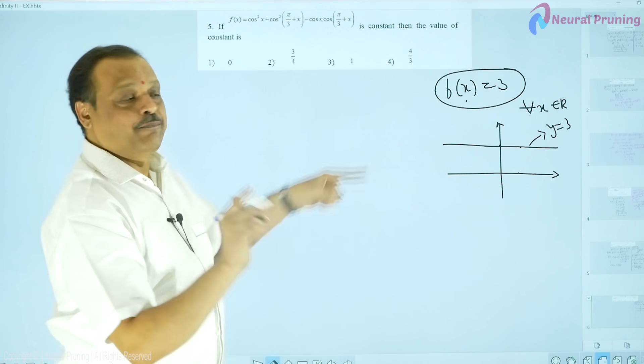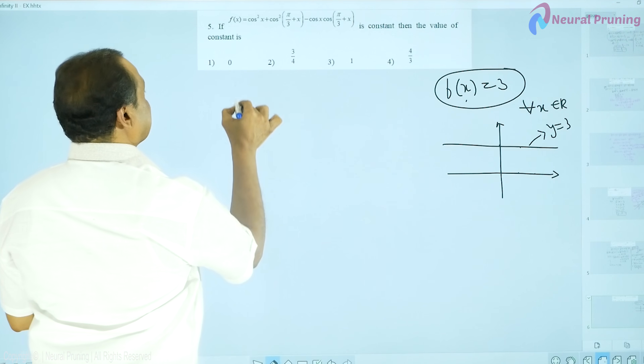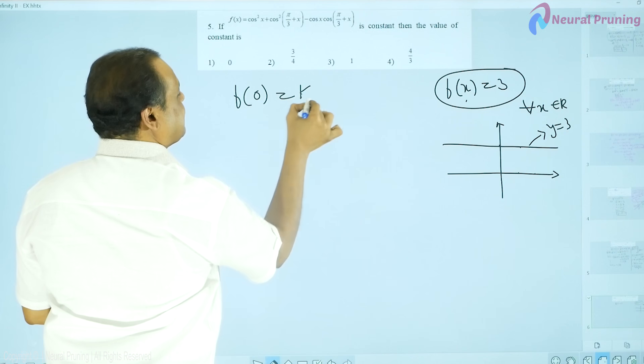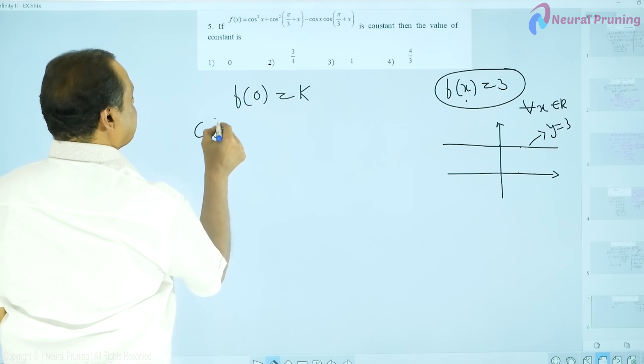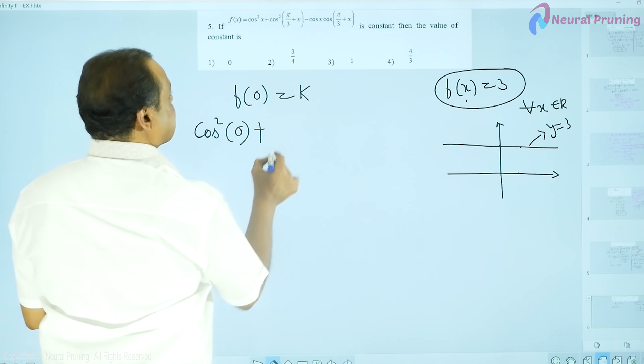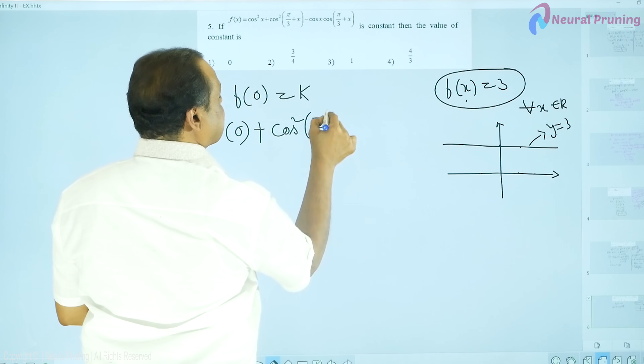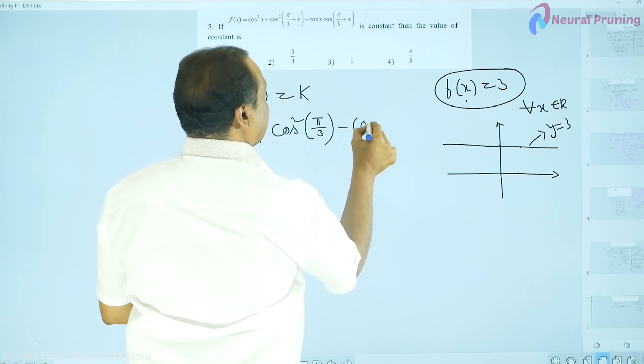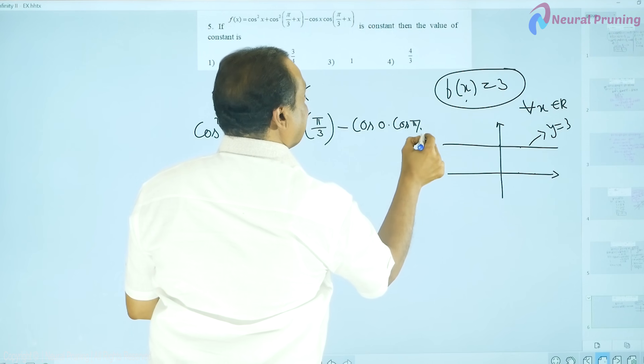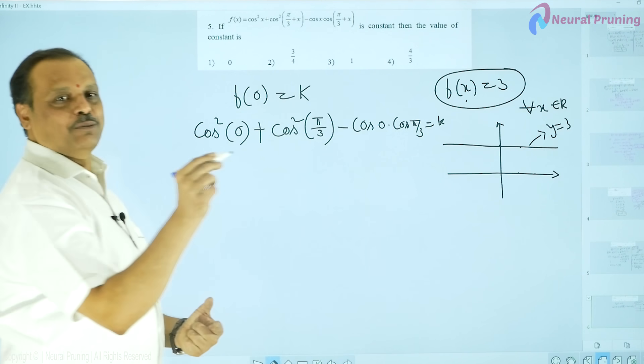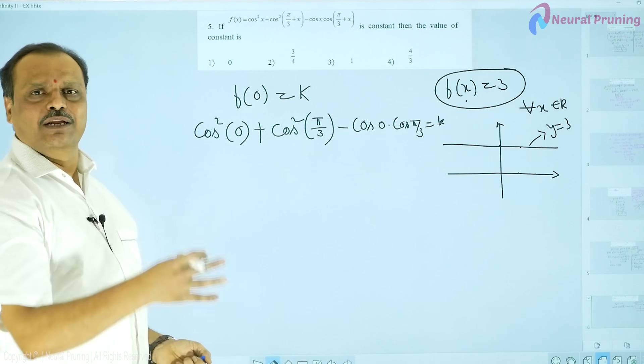That constant can be obtained by substituting any value. I will now consider that f of 0, it is equal to k. That constant is to be found. And what is f of 0 here? It is cos square 0, cos square 0 plus cos square of pi by 3. If I substitute x is equal to 0, minus cos 0 into cos of pi by 3 and that is equal to k. The constant value can be obtained by substituting x is equal to 0 or any other value, in particular simple value which is 0.